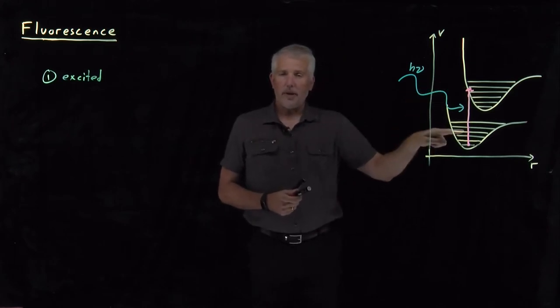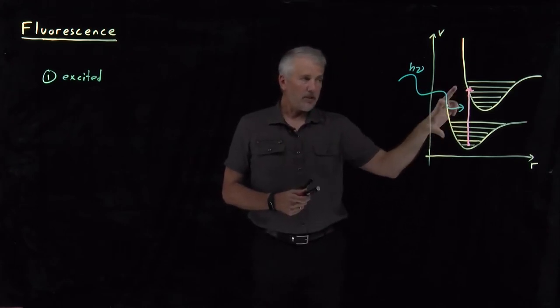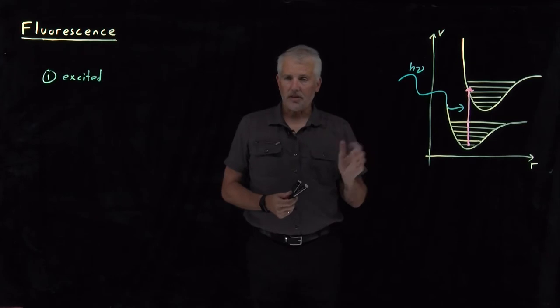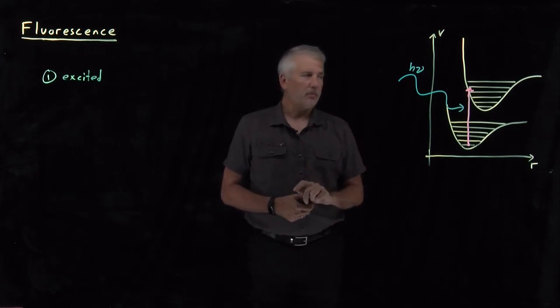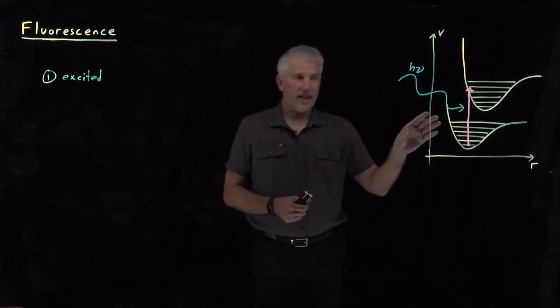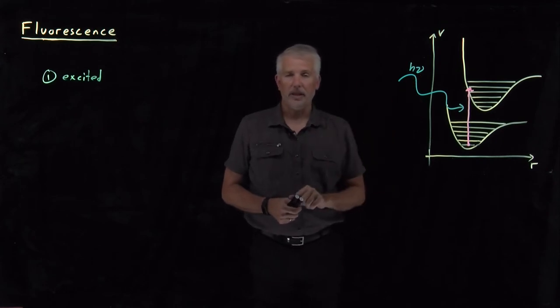One thing that could happen is it could fall right back down. If it falls back down, emits a photon of exactly the same energy, that process is called scattering. That's usually not terribly interesting. But the molecule certainly can emit a photon of the same energy that excited it.